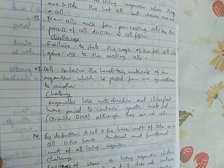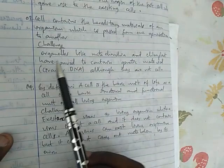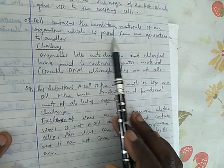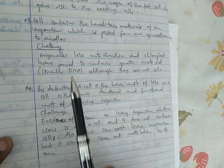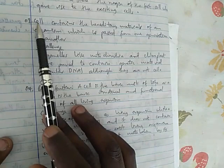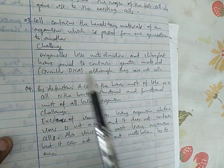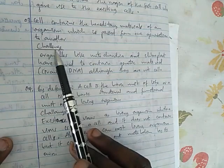The third thing about the third idea, cell contained hereditary material of an organism, which is passed from one generation to another. The challenge of this idea is that organelles like mitochondria and chloroplast have proved to contain genetic material, that is circular DNA, although they are not cells. So according to this idea, hereditary material should be in the cell, not in organelles. But here we find organelles contain hereditary material, which according to this is a challenge to cell theory.